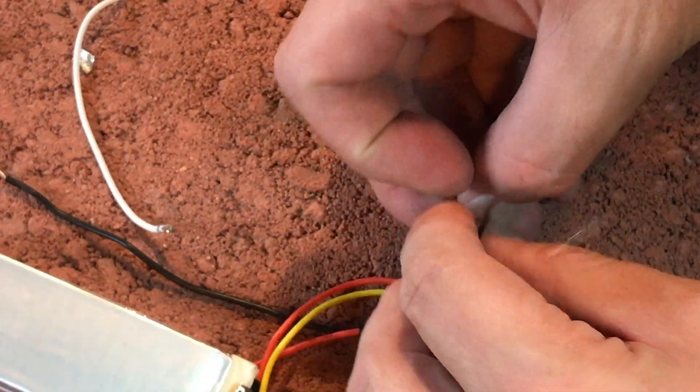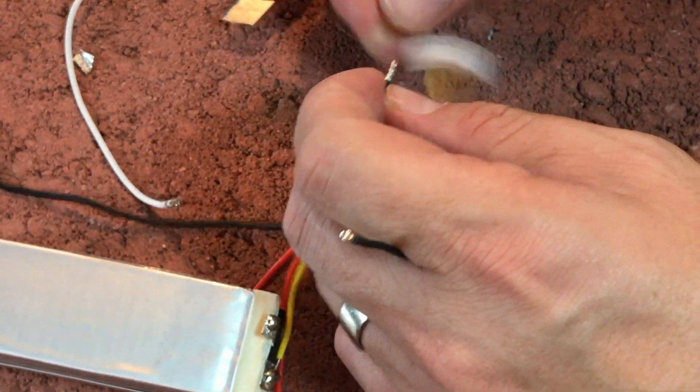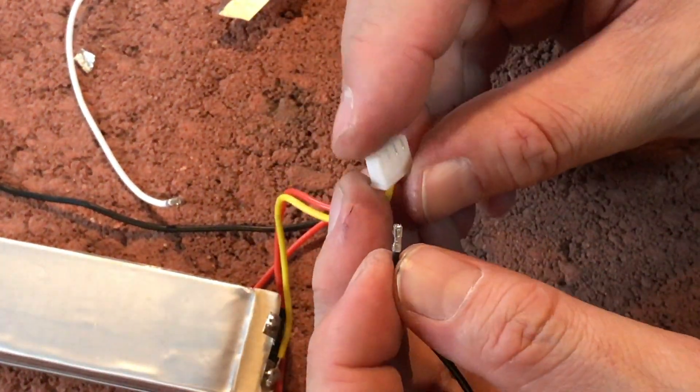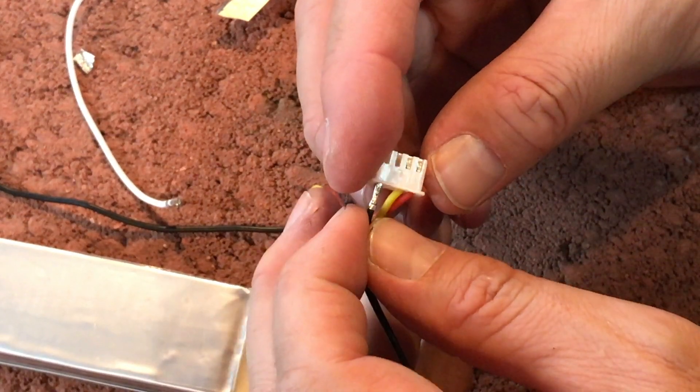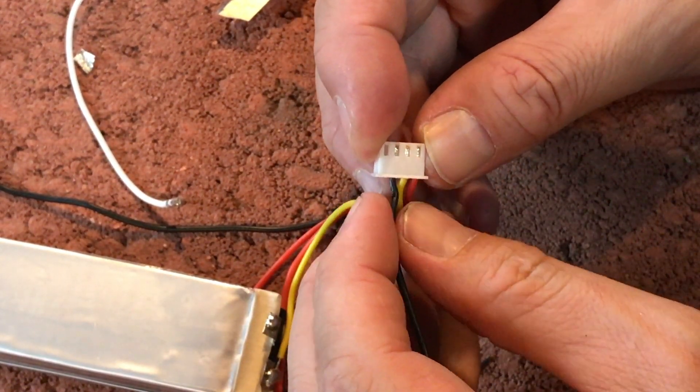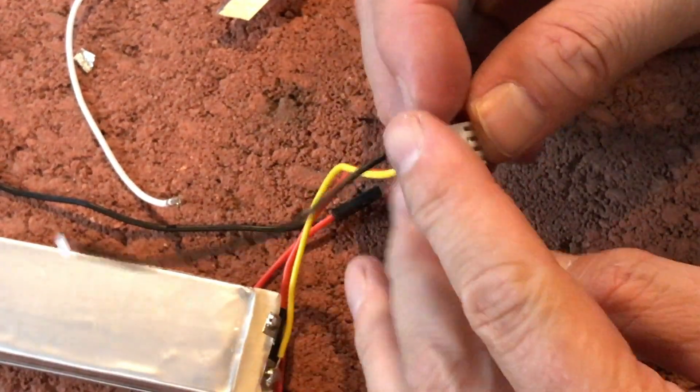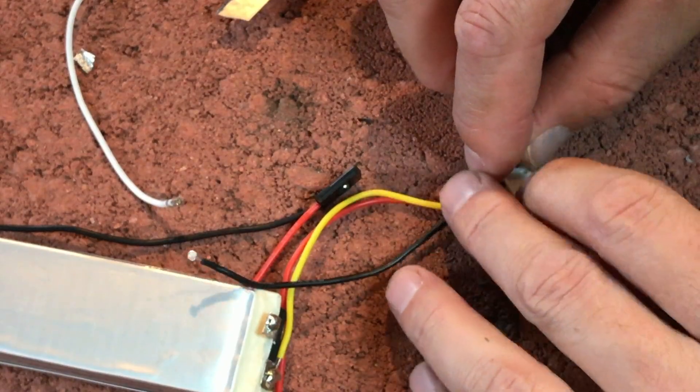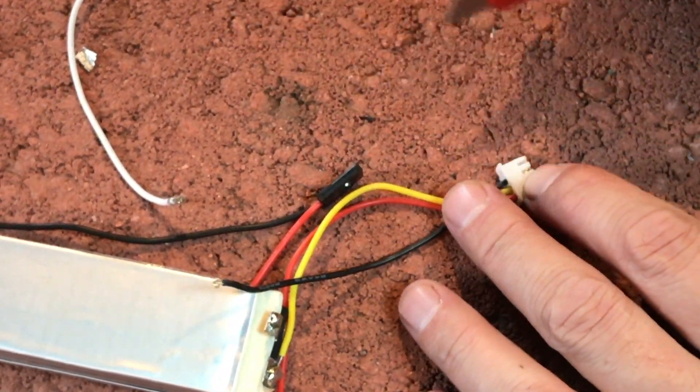It's not going to make a difference either way. We got this black lead out of here. I'm just going to move it from the outside to the inside one here. I'm going to snap that in. Now I'm going to cut off the outside row here, since this is now a 2S instead of a 3S.